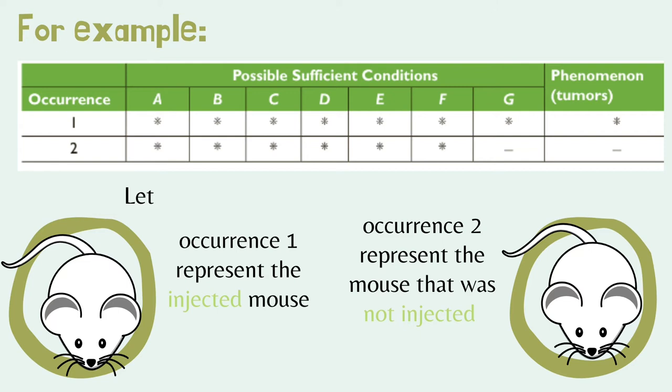Let occurrence one represent the injected mouse and occurrence two represent the mouse that was not injected. Let A through F represent the conditions common to the two mice — genes, age, etc. — and G represent the injection. Using the rule that a condition is not sufficient if it is present when the phenomenon is absent, occurrence two eliminates A through F, leaving G, the suspected carcinogen, as the cause of the phenomenon.